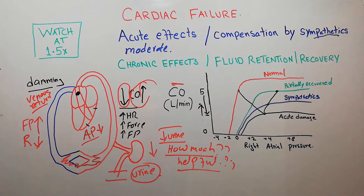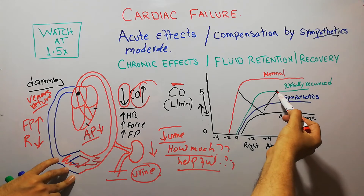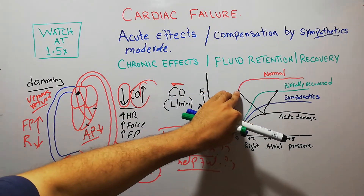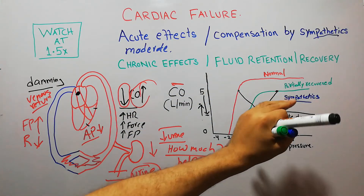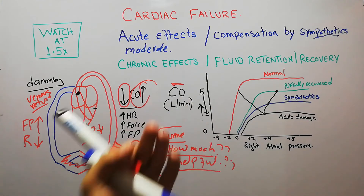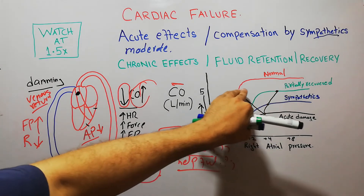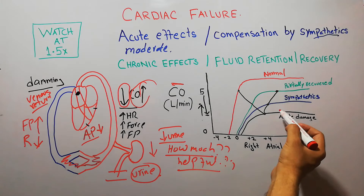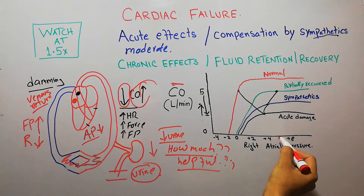More blood starts coming toward the heart. Although cardiac output had decreased, this is compensated by retention of more fluid, which increases filling pressure and decreases venous resistance by dilating the veins, ultimately increasing venous return and cardiac output. In the chronic stage, the cardiac output improves and may return to almost normal level, but at the cost of high right atrial pressure — which may be up to 6 or 7 mmHg.